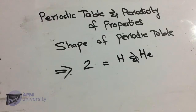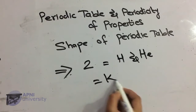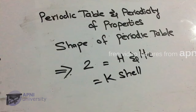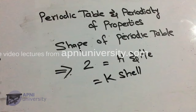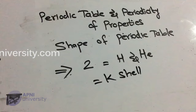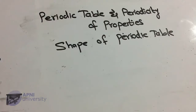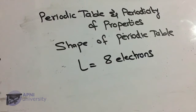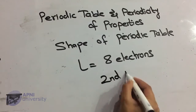First period mein hamare paas two elements present hain — hydrogen aur helium. Dono elements ka valence electron K shell mein hai, aur K shell mein do se zyada electrons accommodate nahi ho sakte. As K shell is completed at helium, so the period also ends at helium, aur agli shell L shell lithium se start hogi.